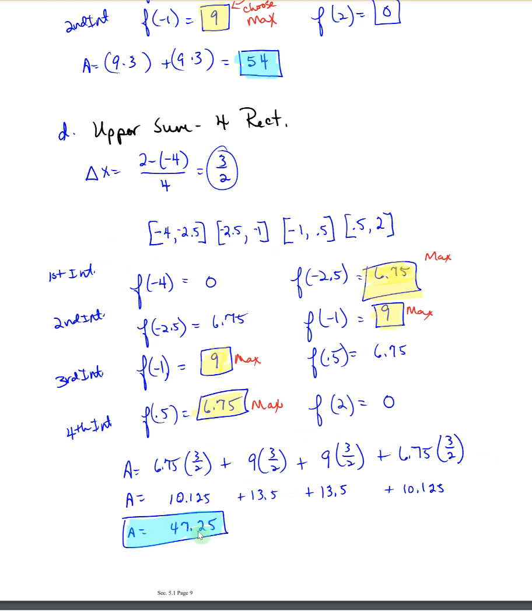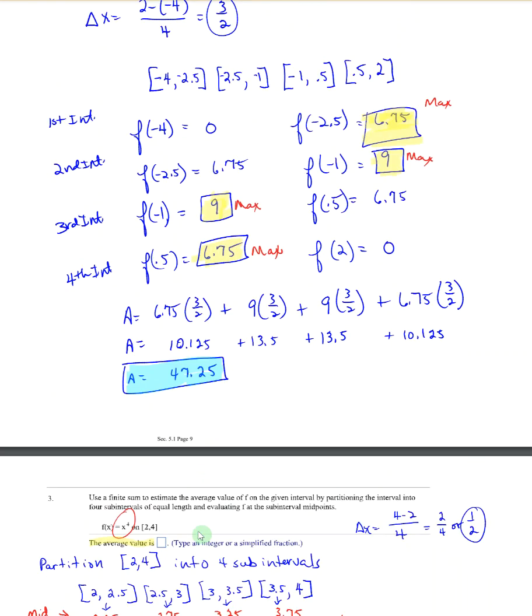Then you would do the upper sum and you do it the same way. You're just following the same process. I don't think we need to go through every one. For those first two questions, each has four parts. Once you get the process down, that's not too bad.